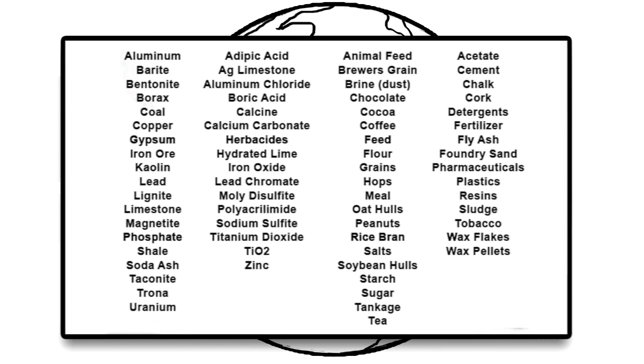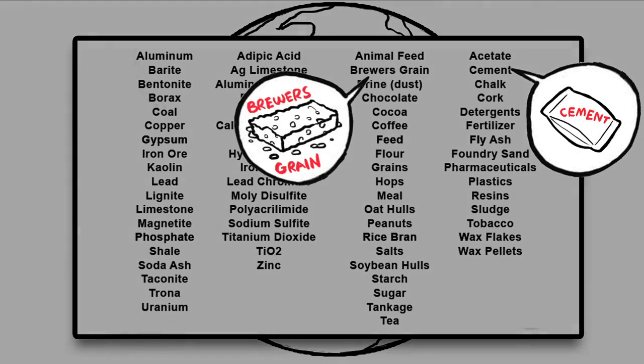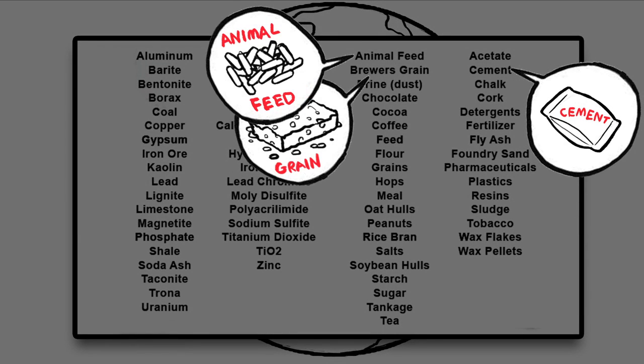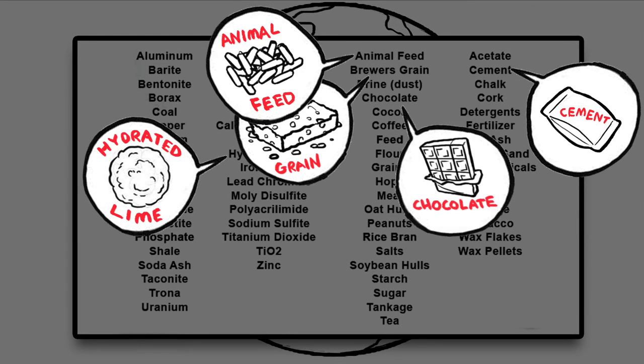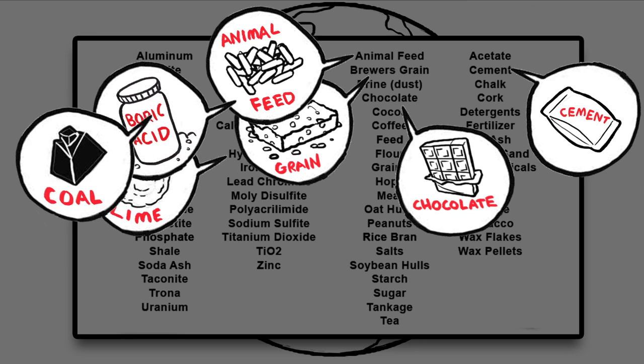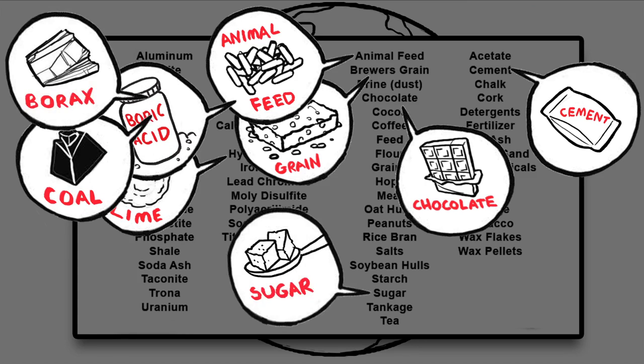Look at all the materials I already keep flowing every day. Cement, brewers grain, animal feed, hydrated lime, chocolate, boric acid, coal, borax, sugar. The list goes on and on.